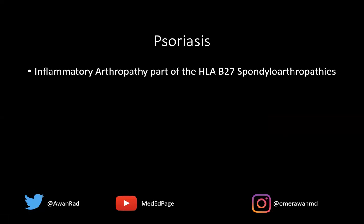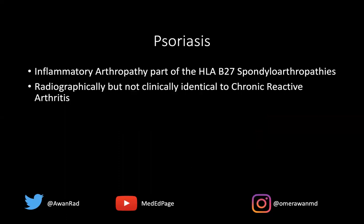Psoriasis is an inflammatory arthropathy as part of the HLA-B27 seronegative spondyloarthropathies. The others are chronic reactive arthritis, IBD arthropathy (inflammatory bowel disease arthropathy), and ankylosing spondylitis. Psoriasis is radiographically but not clinically identical to chronic reactive arthritis — they look identical on x-rays, but clinically they're different. In psoriasis, we get nail pitting and skin lesions. In chronic reactive arthritis, which typically results from prior infection, the classic mnemonic is can't see, can't pee, can't climb a tree — meaning uveitis, urethritis, and arthritis.